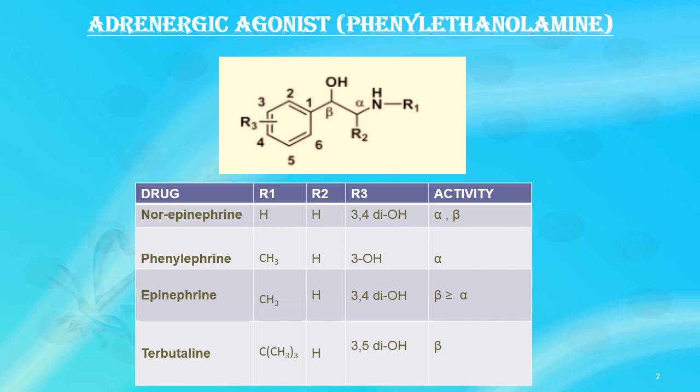If we focus on the general structure of Phenylethylamine, it contains a phenyl ring joined to an ethylene bridge connected to a terminal amino group, hence the name Phenylethylamine. To better understand the SAR, let's divide the structure into three parts: Part 1 contains the phenyl ring, Part 2 has the ethylene linkage with alpha and beta carbons, and Part 3 has the amino terminal.